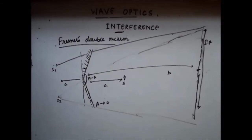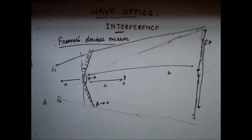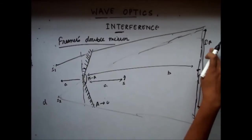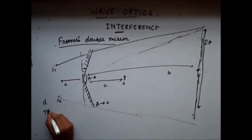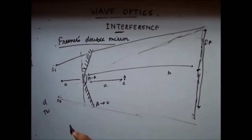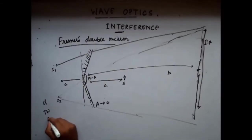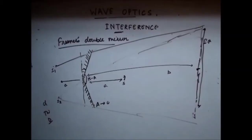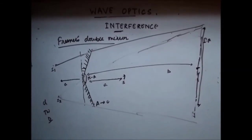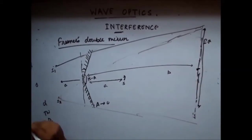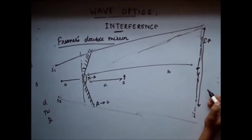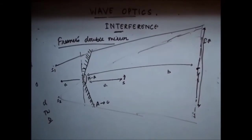Now the question is: find the distance between the slits (d), find the total width of the interference pattern (TW), and find the distance between the slit and the screen (capital D). To find the distance between the slits and the fringe width, let us do some geometric construction.